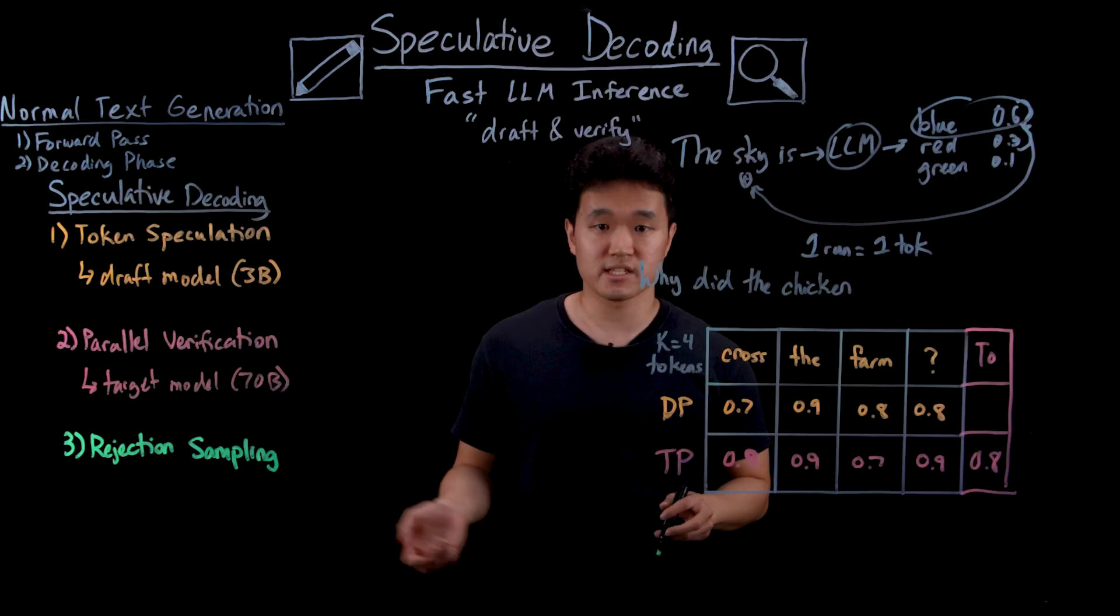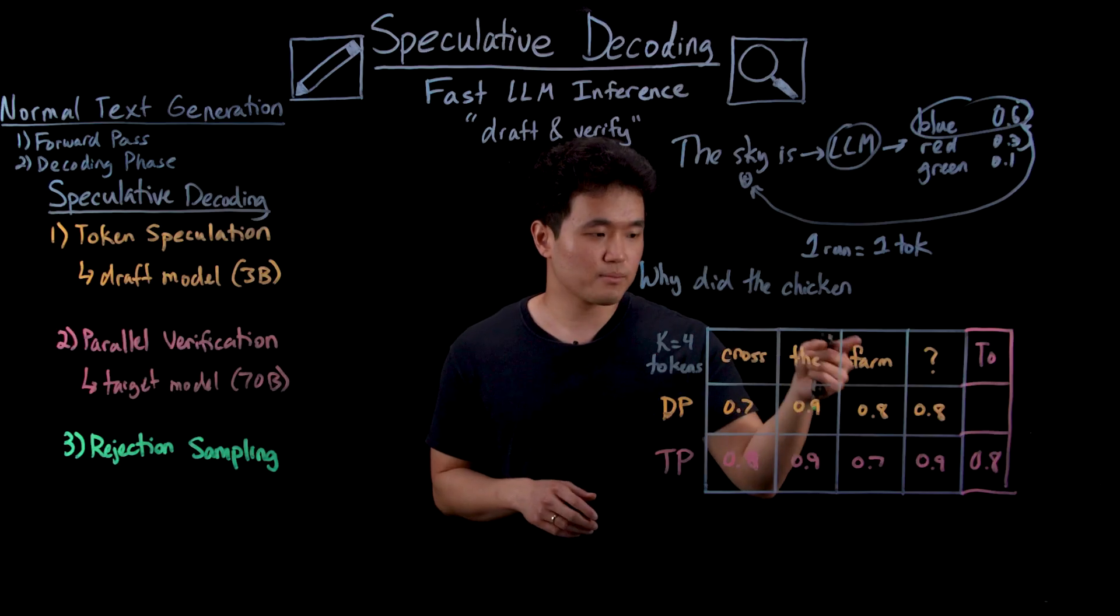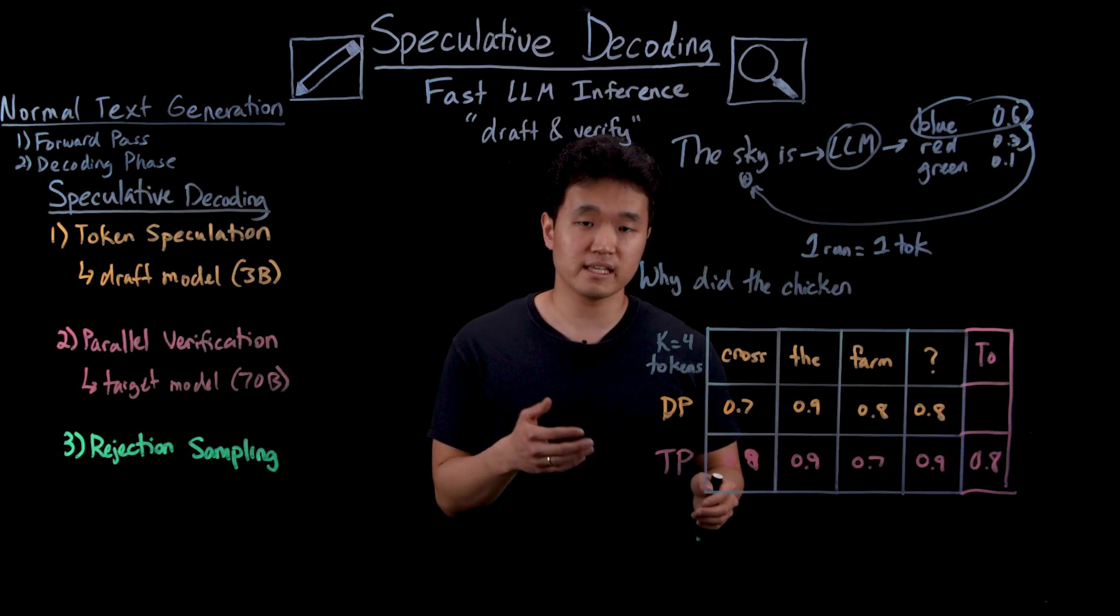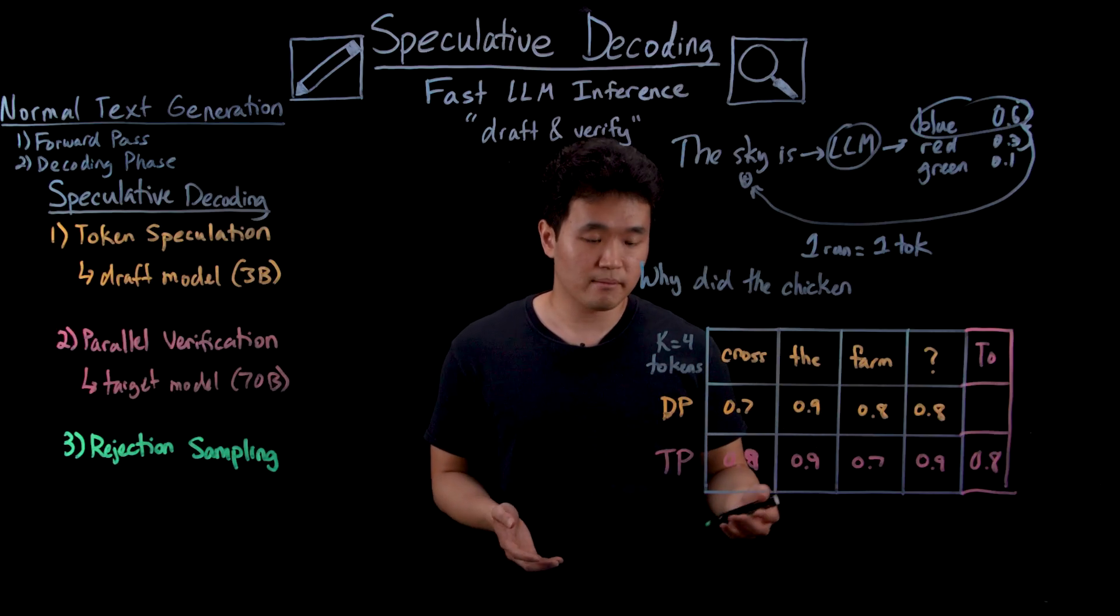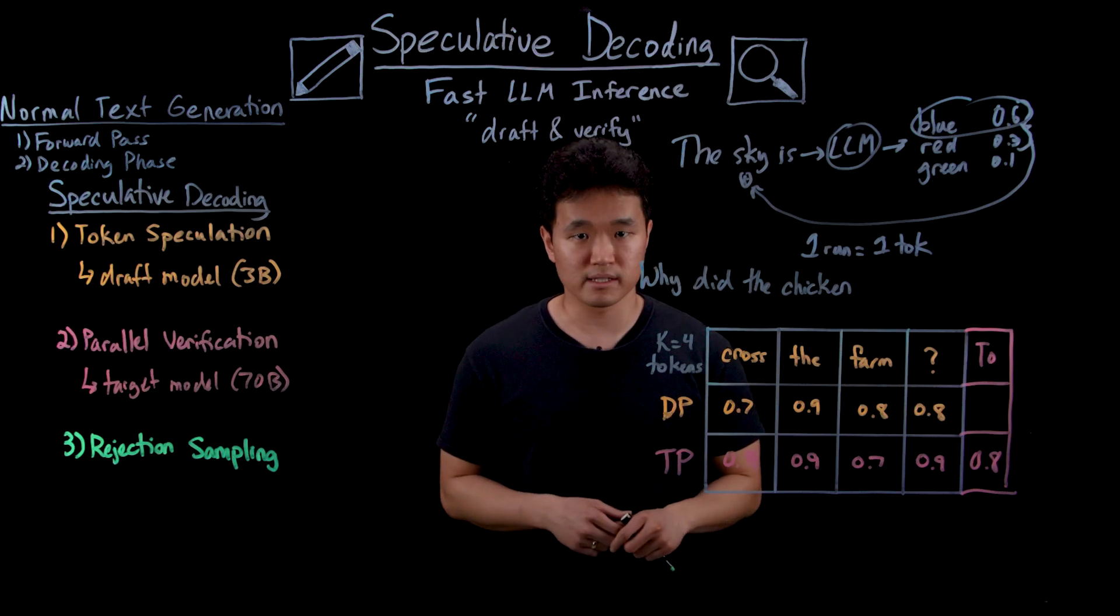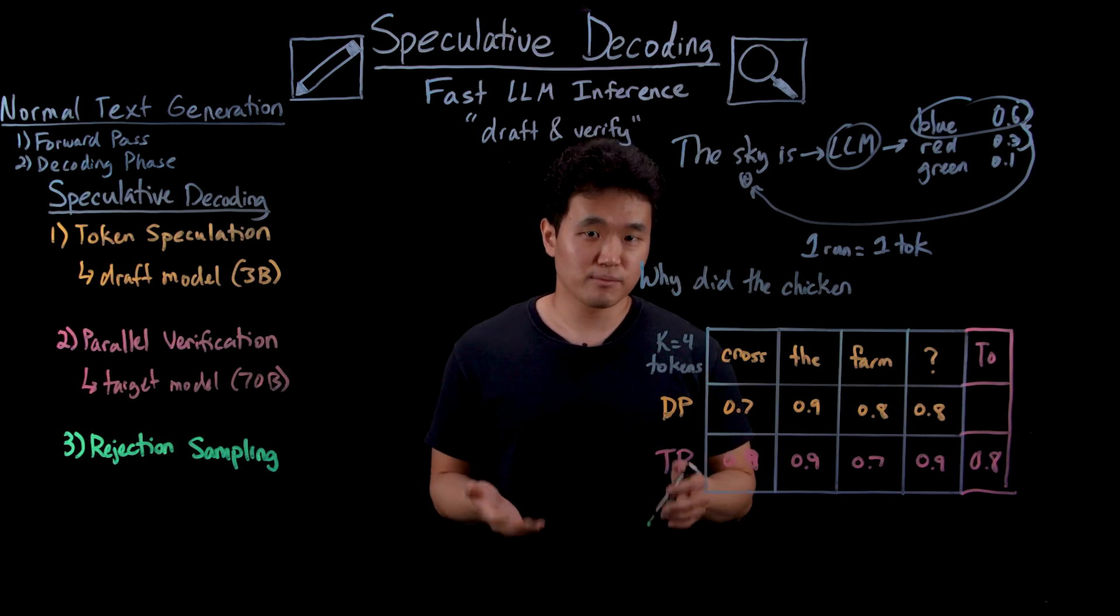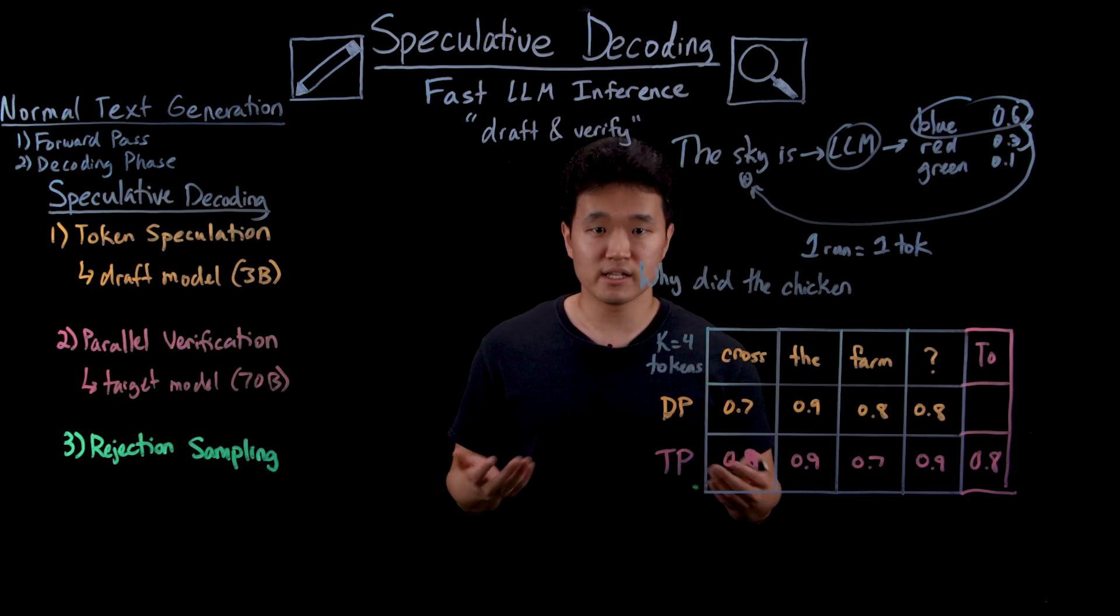And this brings us to the final step, which is called rejection sampling, where we go through each of our predictions one by one and choose to either accept or reject them by comparing these two sets of probabilities. Let's use a very simple rule, although in application we'd use a more complex one.